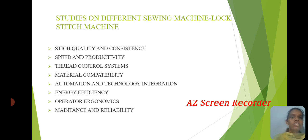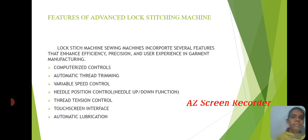Studies on different sewing machines cover: lockstitch machines, stitch quality and consistency, speed and productivity, thread controlled systems, material compatibility, automatic and technical integration, energy efficiency, operator ergonomics, and maintenance and reliability.